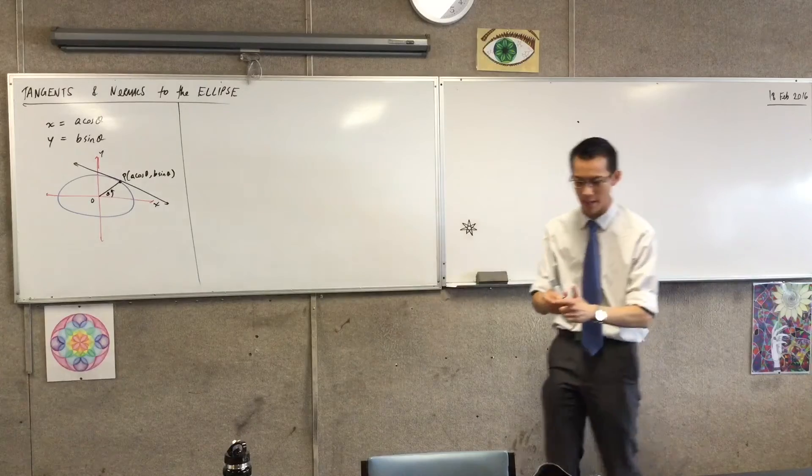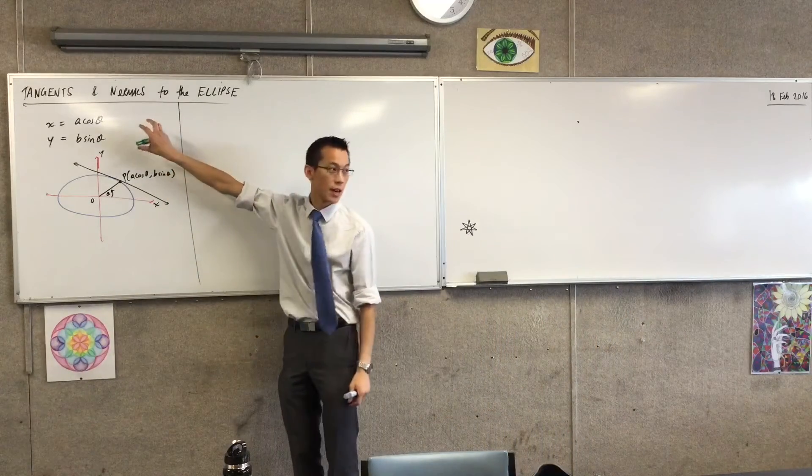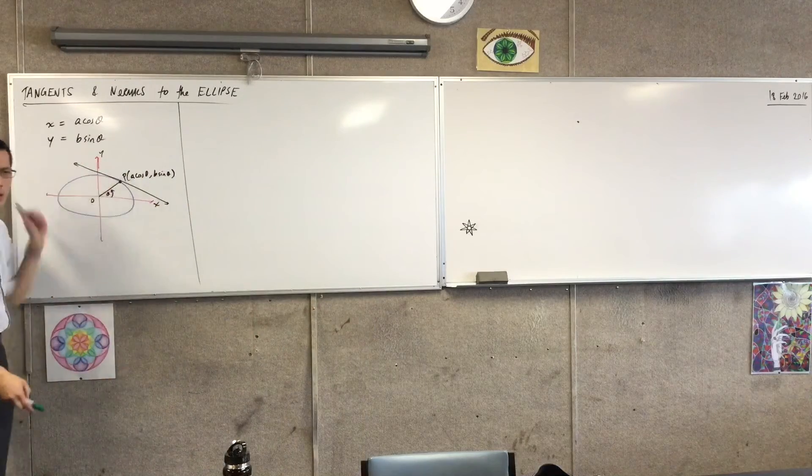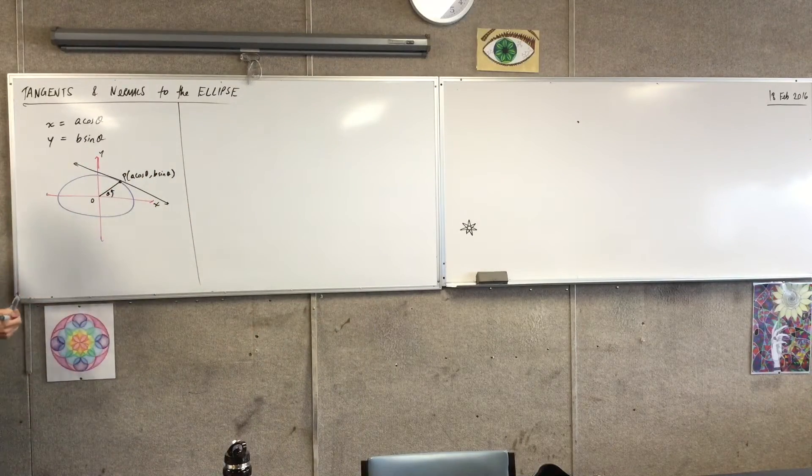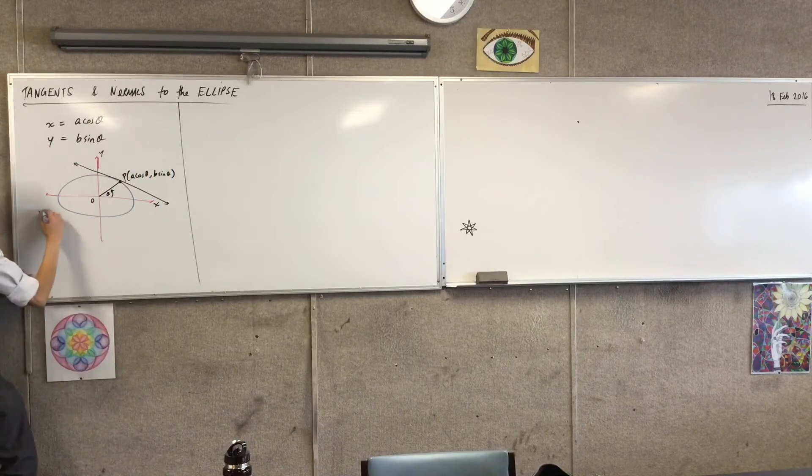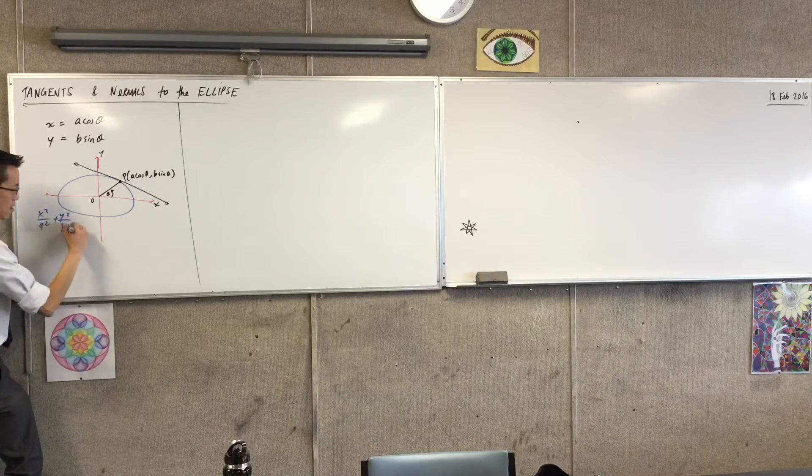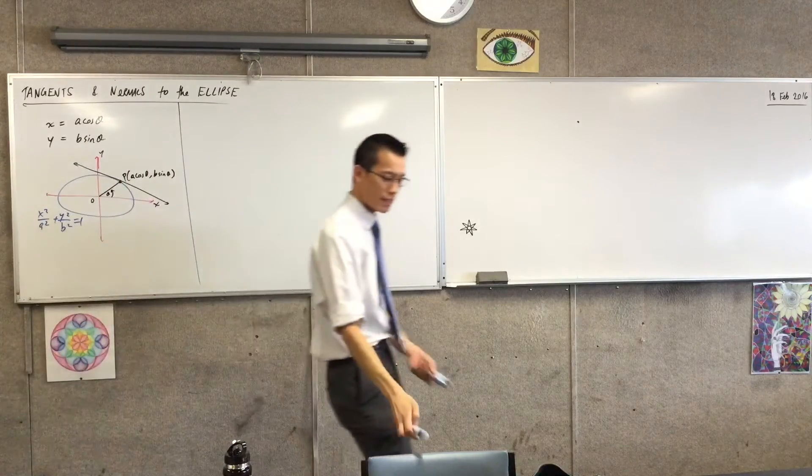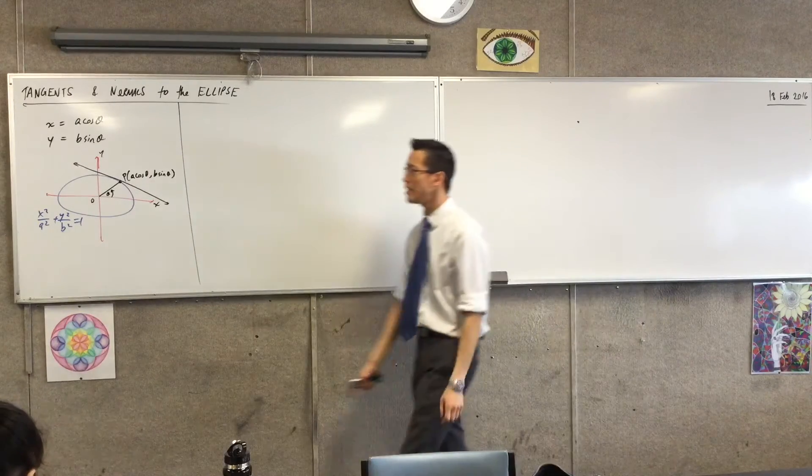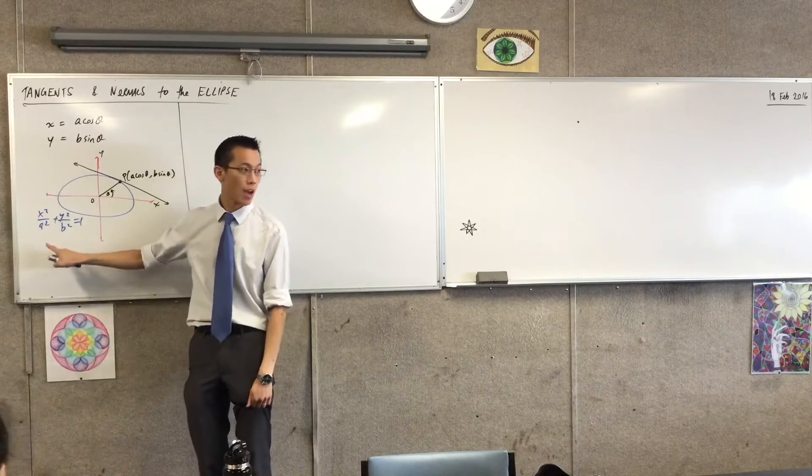Now, pause for a second. Don't write this next part down. This is one of the reasons why the parametric equations are more powerful. What's the equation of this ellipse at the moment? x² / a² + y² / b² = 1. Now, in order to get this piece of information you just asked me for, the gradient, I clearly am going to need to differentiate this guy in some way. And by the way, we will. But look, it's a royal mess.